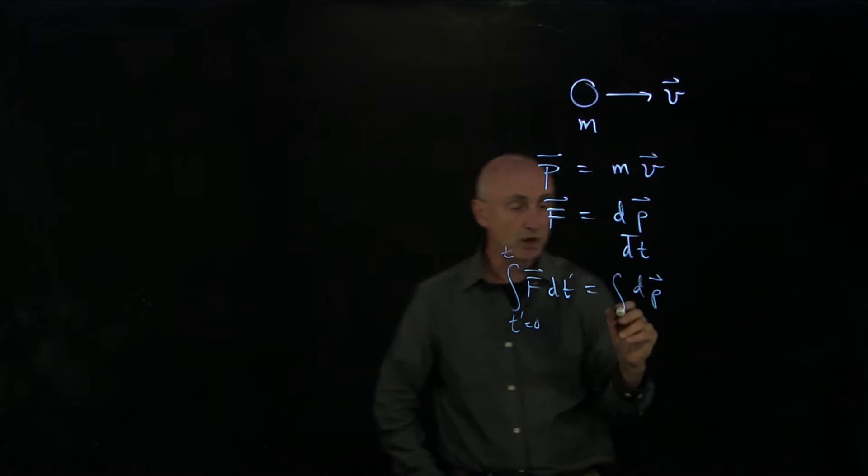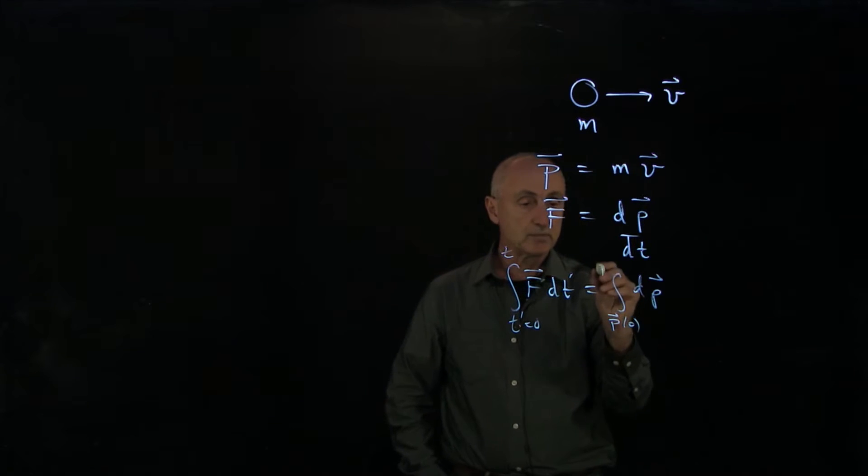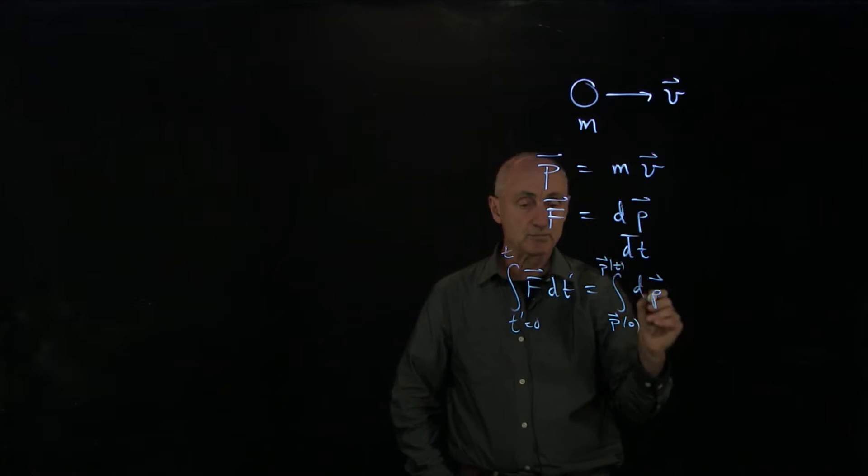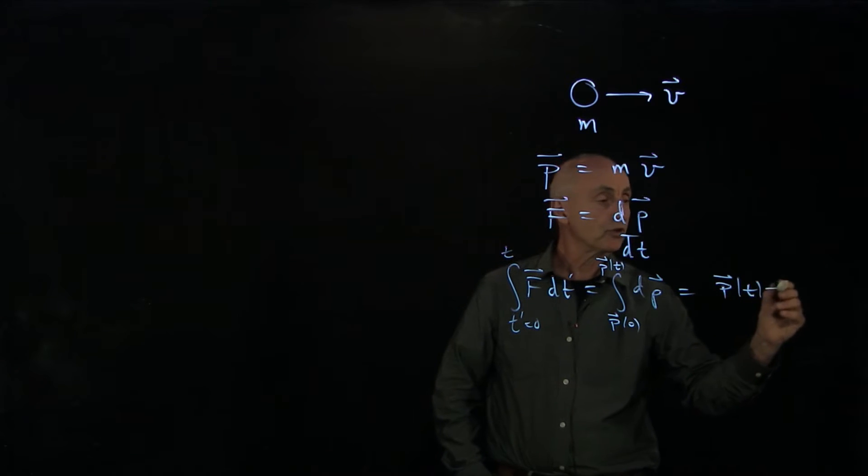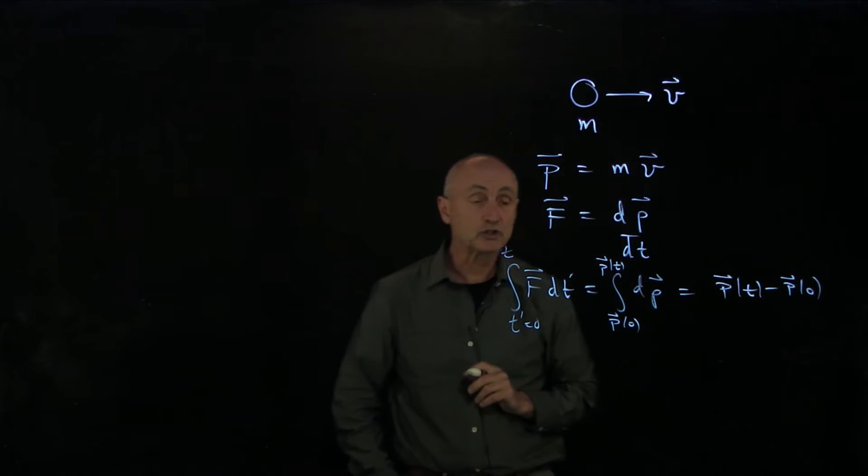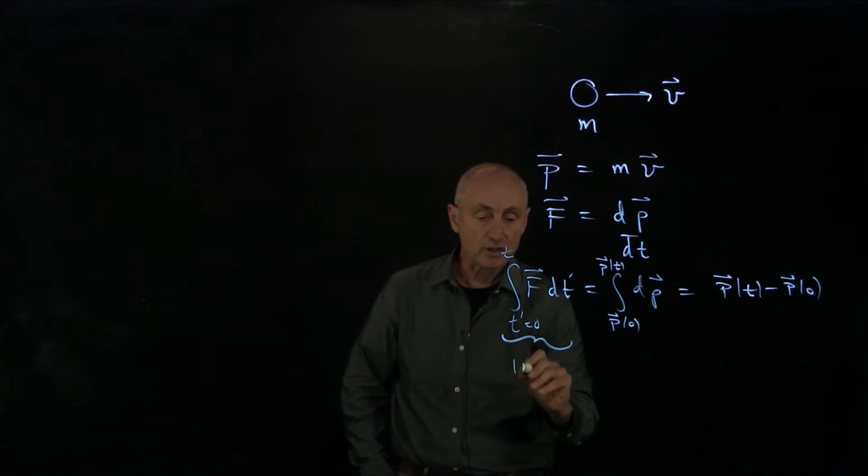So we're integrating t prime, taking our momentum from some initial momentum to some momentum at time t. We have that the impulse causes the momentum of this single particle to change. In particular, this is what we call impulse.